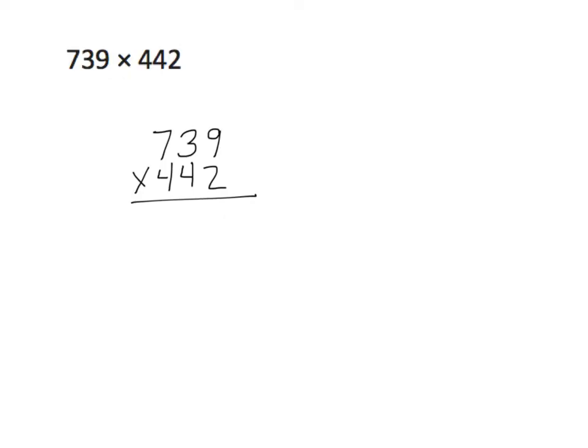The instructions tell us to: one, estimate the product, and then find the actual product using the standard algorithm. Without getting into elaborate procedures, we should know by now that we can easily round 739. We want to round it to its greatest place, which is the hundreds, so we're going to round it to the nearest hundred. That would round to 700. We're going to put our multiplication sign in, and 442 would round to 400.